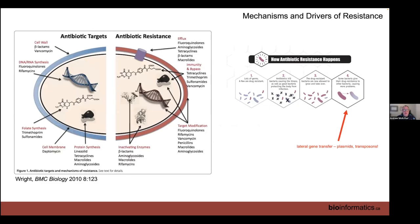Before getting into the nuts and bolts, there are a few things to think about for context. Antibiotics target a huge range of things in bacteria, so bacteria have evolved a large range of resistance strategies: efflux to spit the drug out, making membranes impermeable, modifying or protecting the target, or degrading the drug. There are thousands of resistance genes; not all are important to you. Some drug classes you would never prescribe, so you need to decide which mechanisms and drug classes matter in your system.